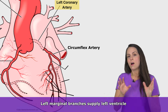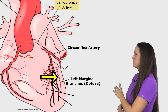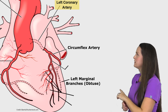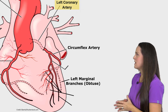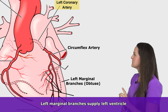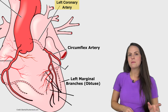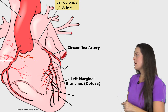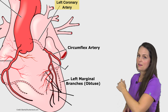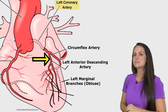The circumflex artery also has smaller branches known as the left marginal branches — you may also hear them called obtuse marginal branches. These are on the posterior side of the heart, which is why you see dashed lines indicating the back side. They help supply the left ventricle and extend down to the apex. Back on the anterior part of the heart, we have another big branch of the left coronary artery: the left anterior descending artery, also called the LAD.